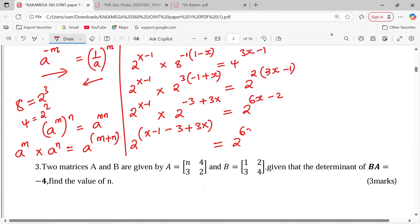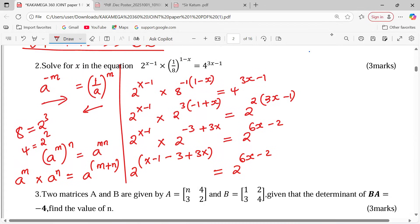We just add the powers like that. This is equal to 2 power 6x minus 2. At this point, because the base is the same, both on the right and on the left-hand side, we can directly equate the powers now. Now that we have base 2 on both sides, we equate the powers.